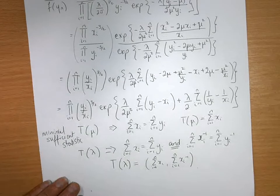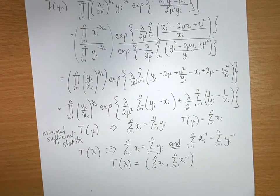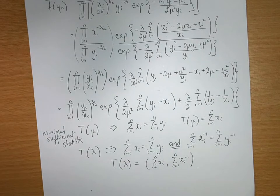And there are your minimal sufficient statistics for the parameters of an inverse Gaussian, otherwise known as an inverse normal distribution.